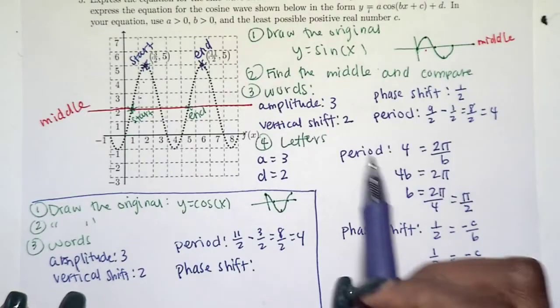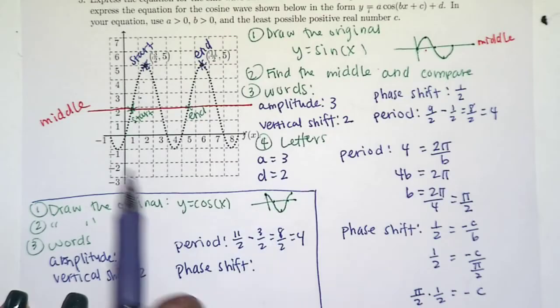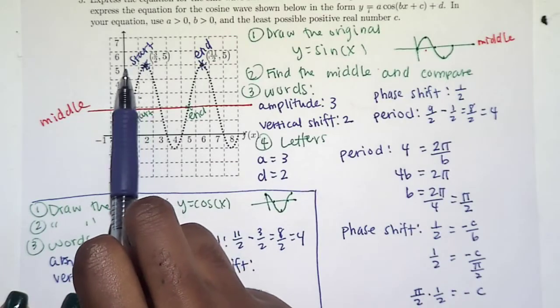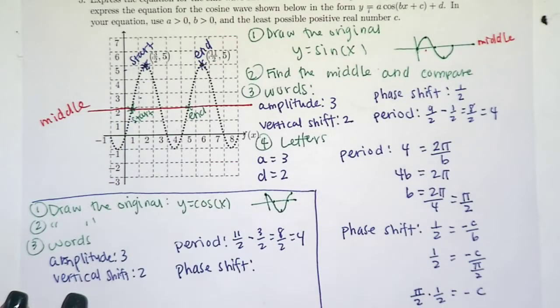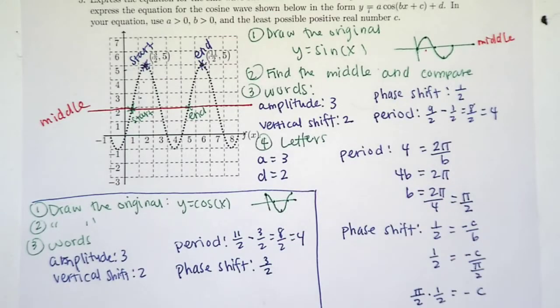So notice, we start here at zero, one, so at zero on the x-axis. Notice here, this has been shifted over three over two units. So three halves is going to be the phase shift. And we shift it to the right, so we're just going to keep it positive.